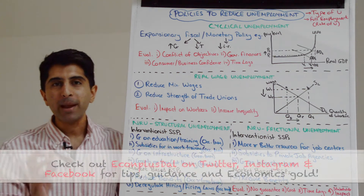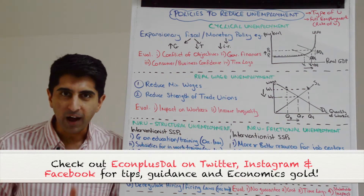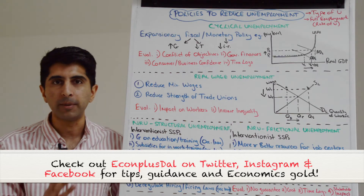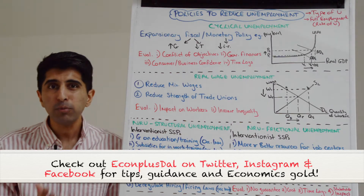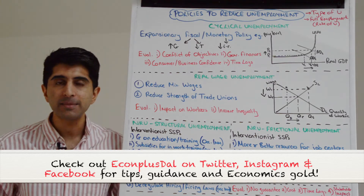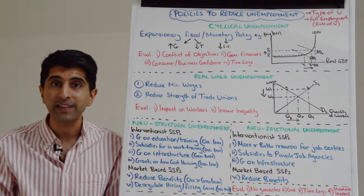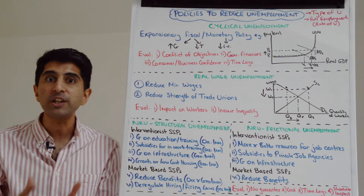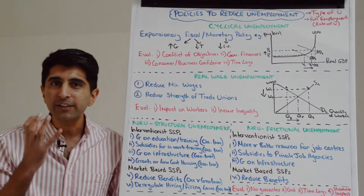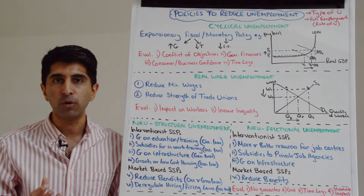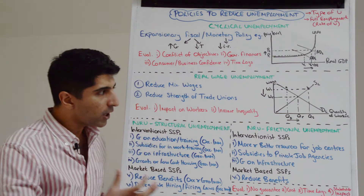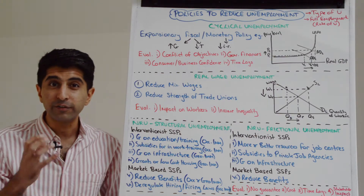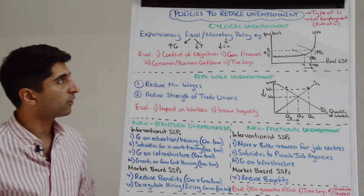Hi everybody! We know that the macro objective for unemployment is low unemployment, or more precisely full employment. So if unemployment is greater than what we would like it to be in the economy, we need to bring that down via the use of macro policies. But which policies? Well, that depends on the type of unemployment that is most prevalent. So in this video we're going to look at all the different types of unemployment and target their reduction via the use of macro policies.